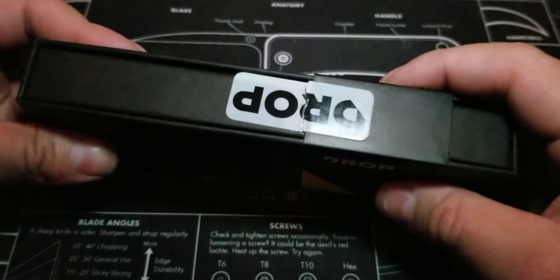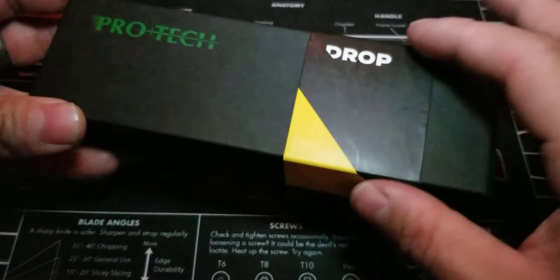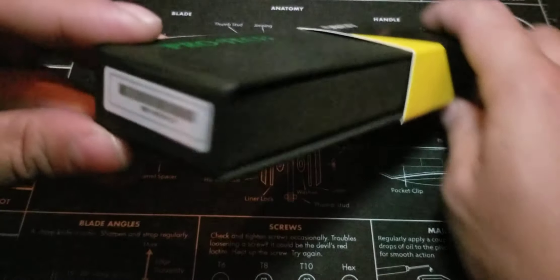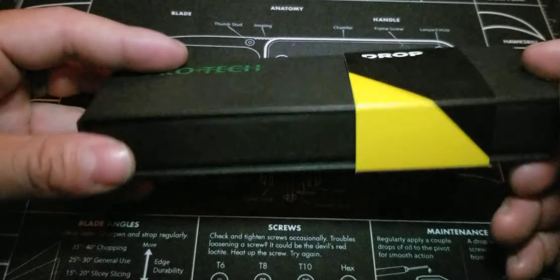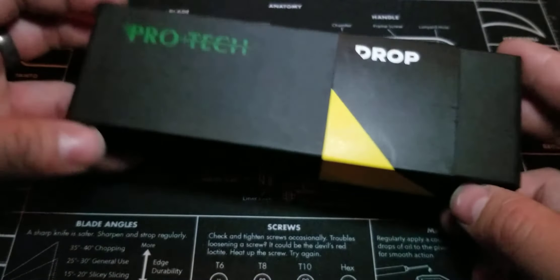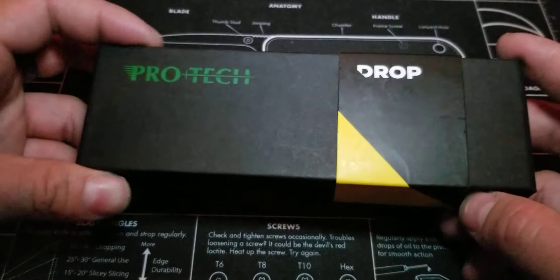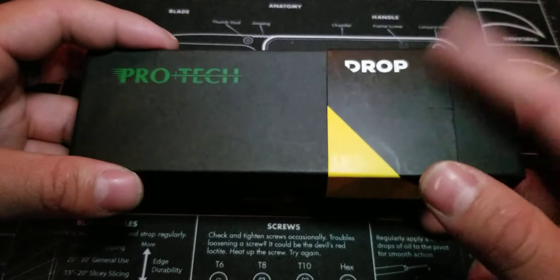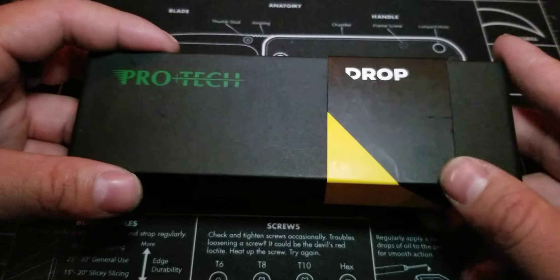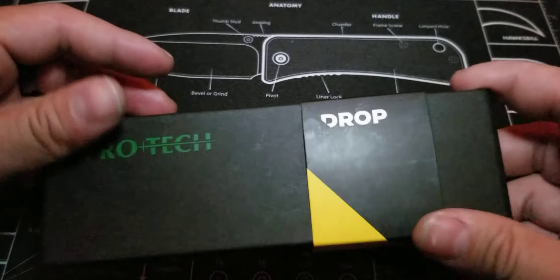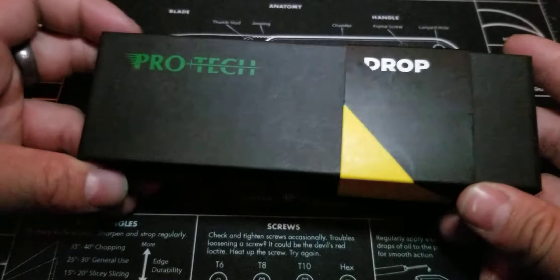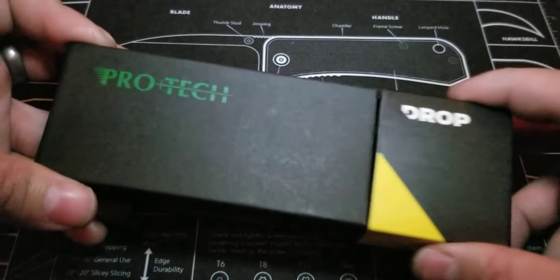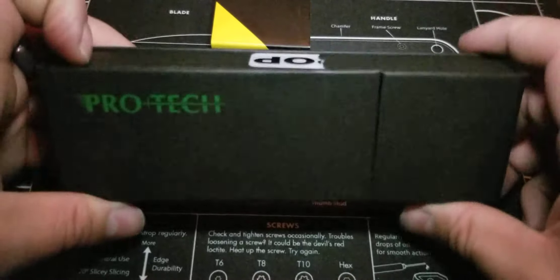So let's go ahead and get into it. It's sealed by this drop sticker right here, and it has a drop sleeve on this nice ProTech box. And yes, I did purchase this on Amazon, just to let you know if you're curious about this. This is the Mordax button lock. At least that's what it's listed as.